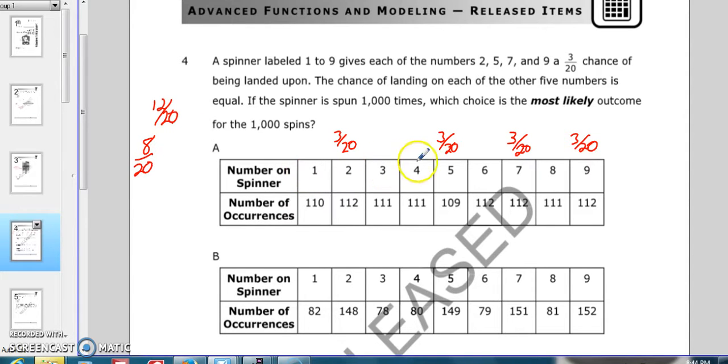So 1, 3, 4, 6, and 8 have the possibility of 8 out of 20.